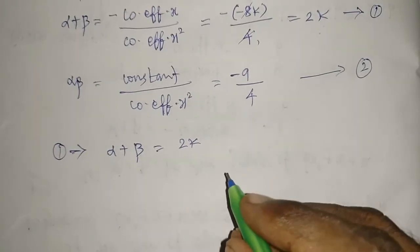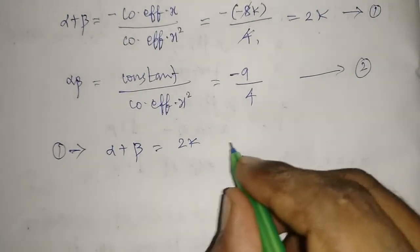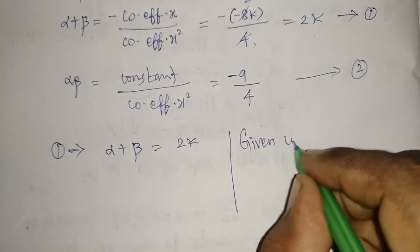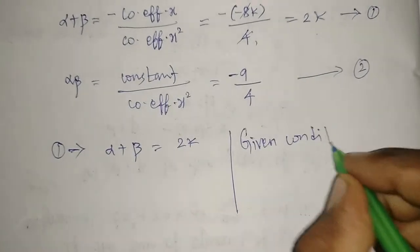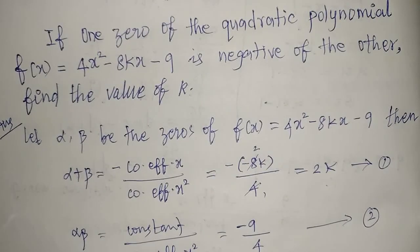Before that, the given condition we will write here. I will write the given condition. What did they give? The given condition—what they said—one of the quadratic polynomial is negative the other.